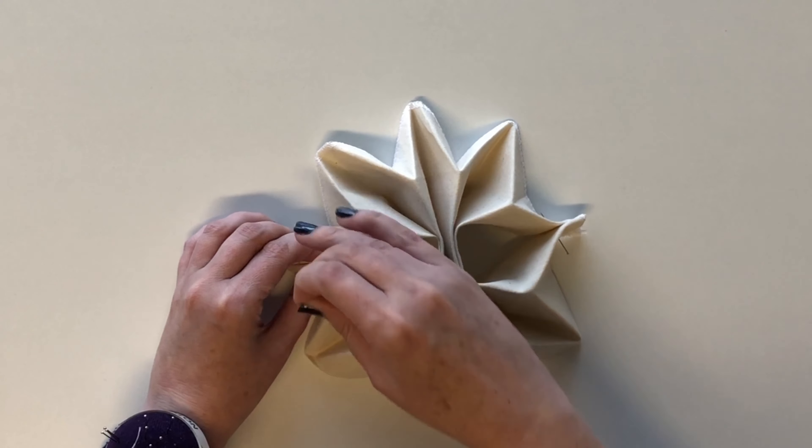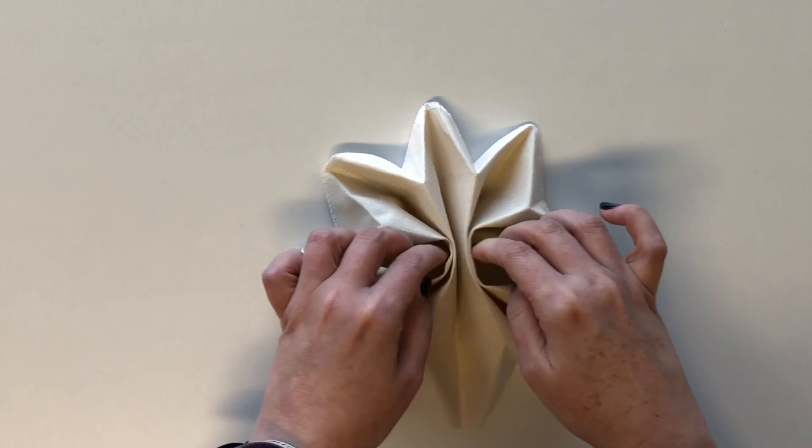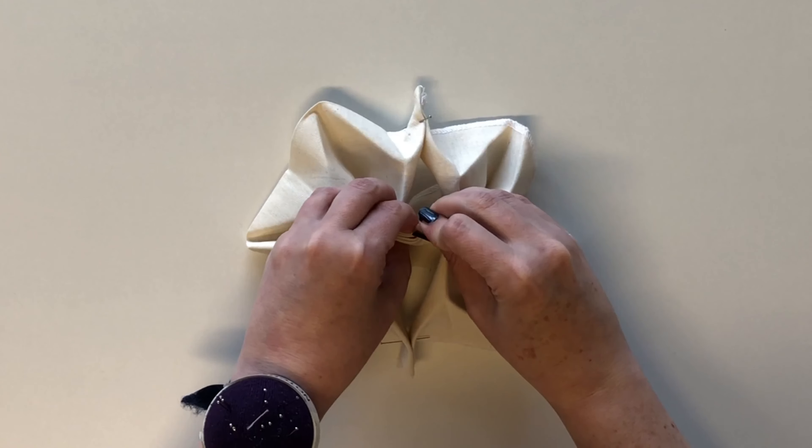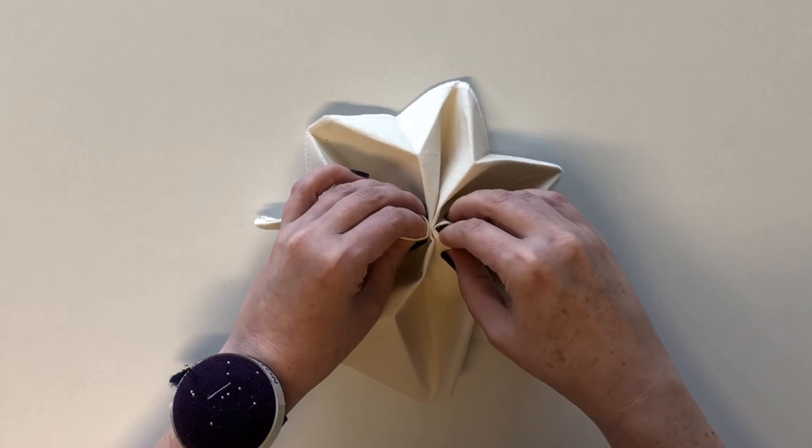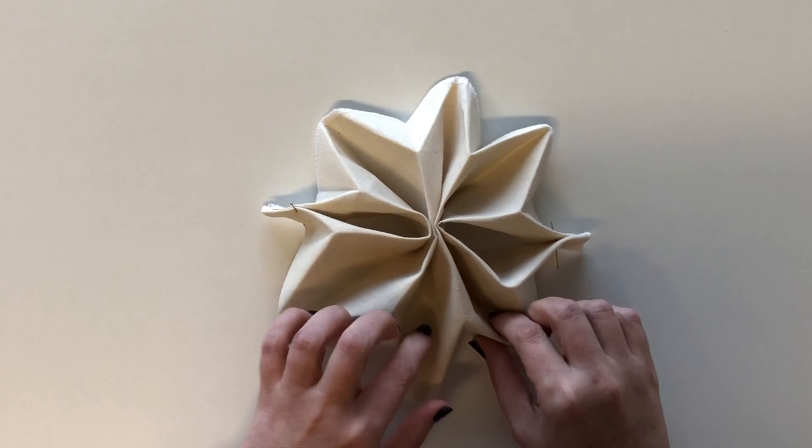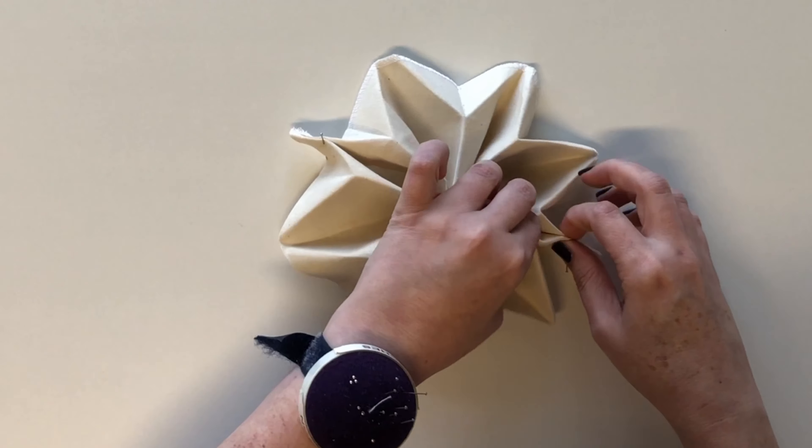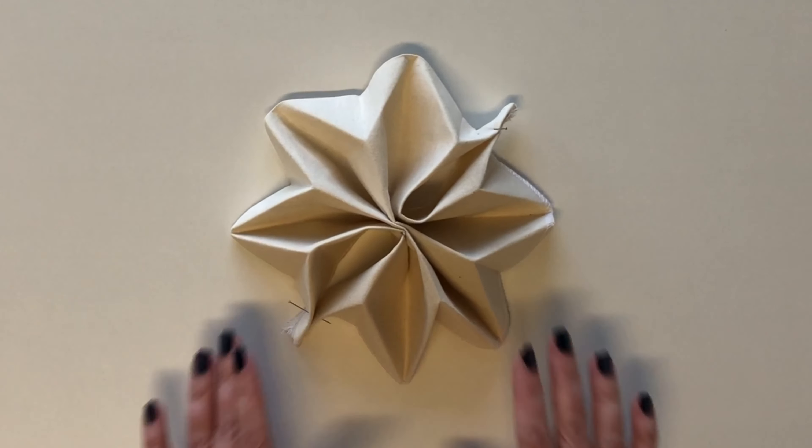Do the same to the other side. And then pin or stitch it together in the middle. And there you go, that's your folded star.